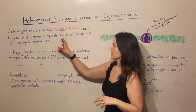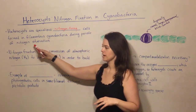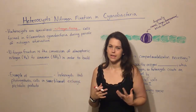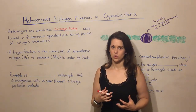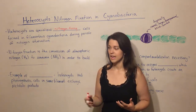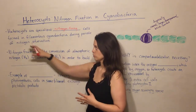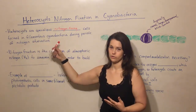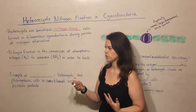In filamentous cyanobacteria, during periods of nitrogen starvation — basically when they don't have enough nitrogen to make the things they need — some of the cells will transition into heterocysts in order to undergo nitrogen fixation and get the nitrogen for the cell.